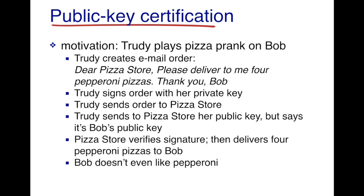Now think about Bob — he doesn't even like pepperoni pizza and now he has to pay for four pizzas. The biggest issue here was that the pizza store could not verify whether this public key was actually tied to Bob. When Trudy sent the pizza store her public key and said it was Bob's, they blindly believed her because they had no way of verifying whether the public key she sent was hers or Bob's.